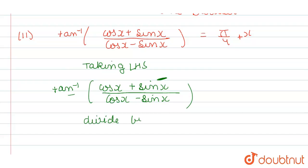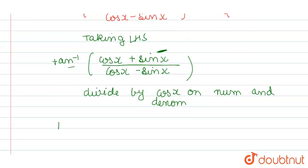So we will divide by cos x on numerator and denominator. So it will become tan inverse of 1 plus tan x divided by 1 minus tan x.